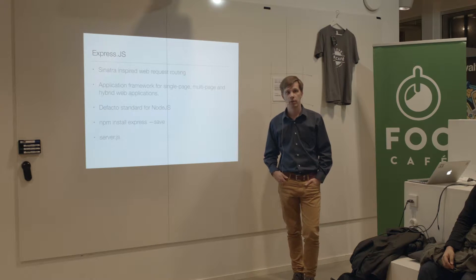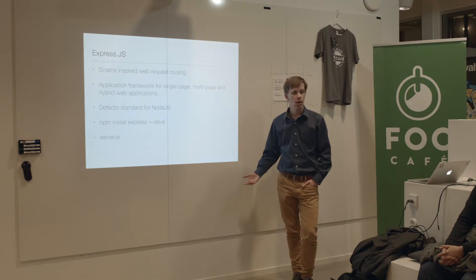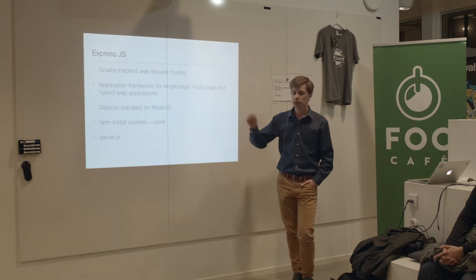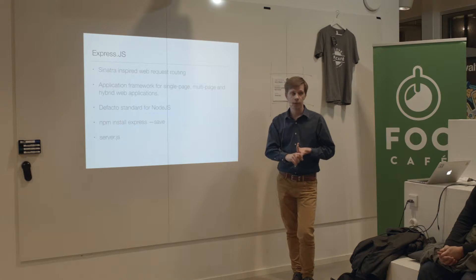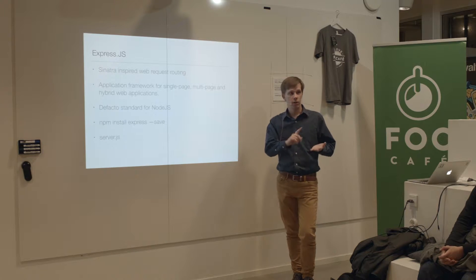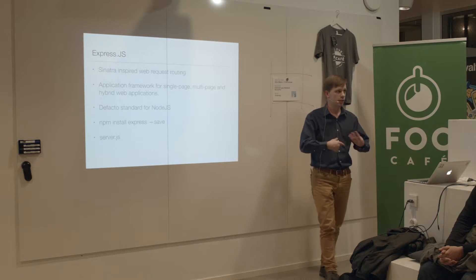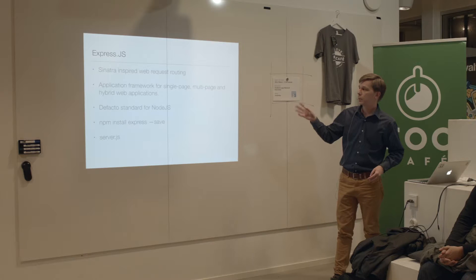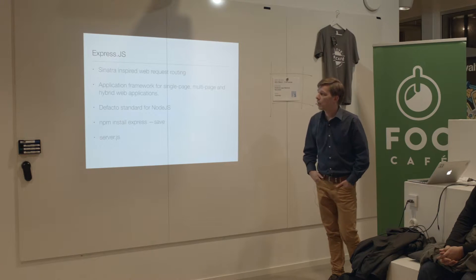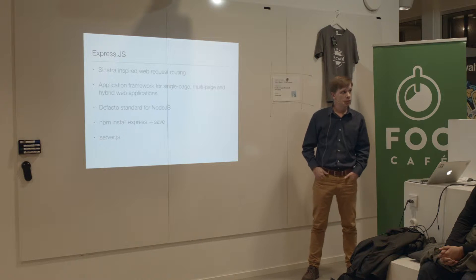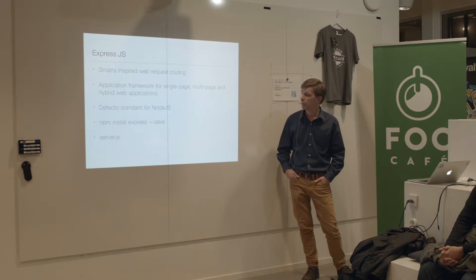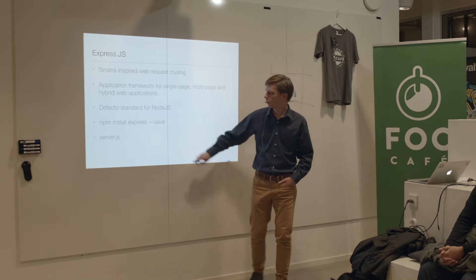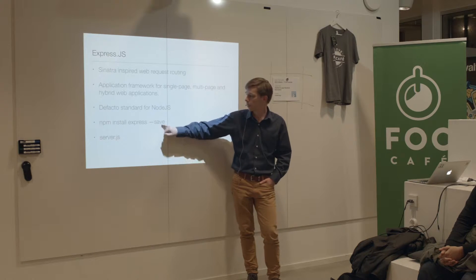You often hear about the MEAN stack or the PIN stack — short for the parts you're using in your application. A PIN stack would be Postgres, Express, Angular, and Node, for example — those are the technologies you're using. So Express is almost always there. It's very inspired by Sinatra, which is another framework used by Ruby developers. It's very easy to install into your application with a simple NPM call. NPM is the Node Package Manager I mentioned before, and it's also a binary you install on your server or machine.